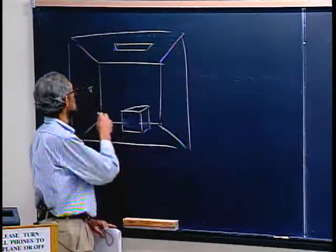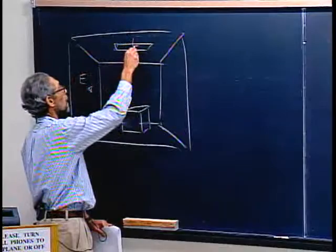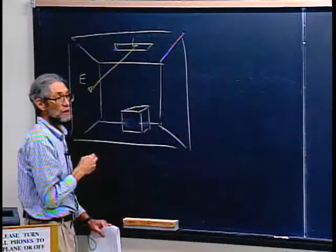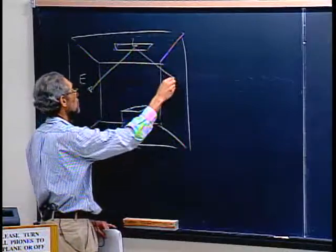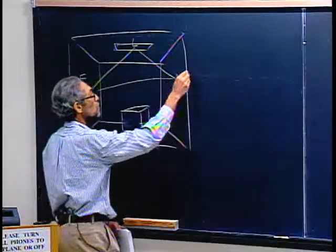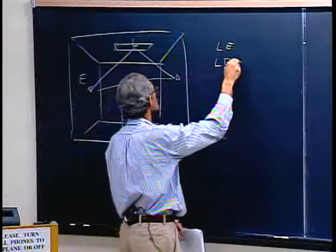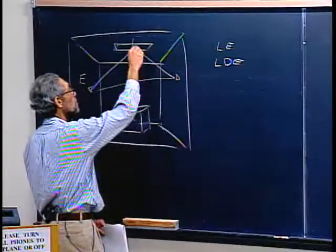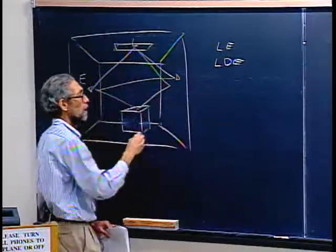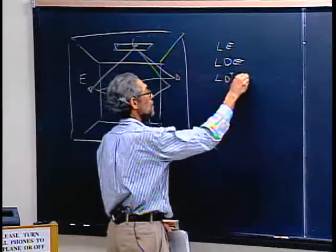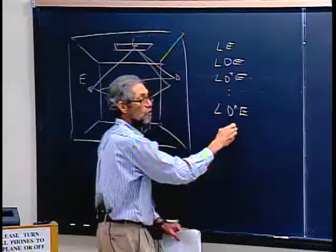The kinds of paths we want to be able to get: if this is the light source and this is the eye, we want paths that go directly from the light source to the eye. We want paths that go from the light source and bounce off a diffuse surface to the eye — so the first kind of path is L-E, the next is L-D-E — or paths that bounce off two diffuse surfaces, and so forth, for any number of bounces.